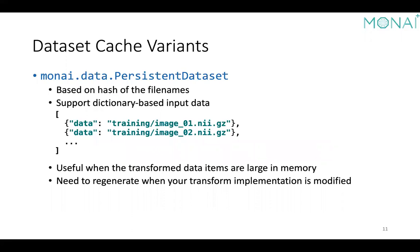The cache stores only the outcome of the last non-random transform. So when using this, it's important to put all deterministic transforms before any randomized ones. The basic caching variant allocates cache space in memory — when you quit the Python program, the cache disappears. The persistent cache variant writes the transform result to disk, with indexing based on a hash of the file names so content can be retrieved reliably even if you switch to another machine.